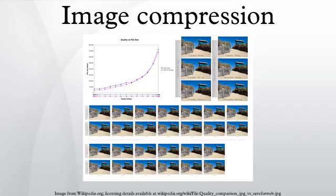Region of interest coding: certain parts of the image are encoded with higher quality than others. This may be combined with scalability.